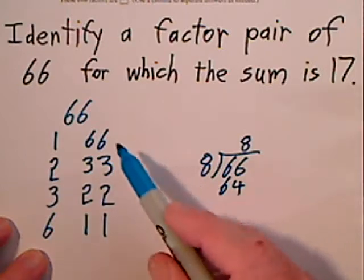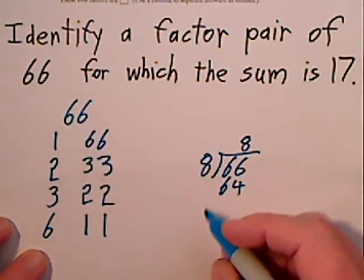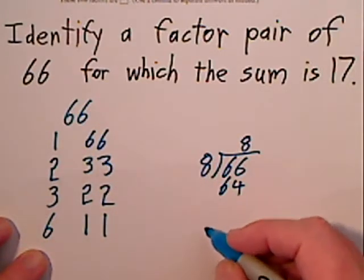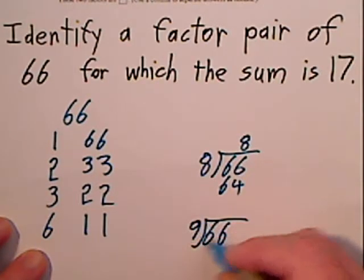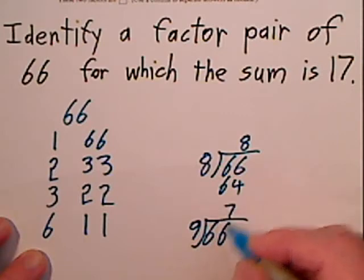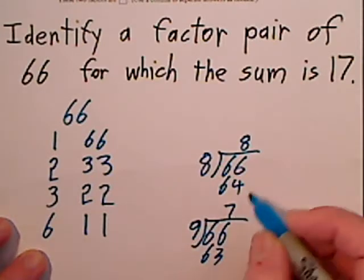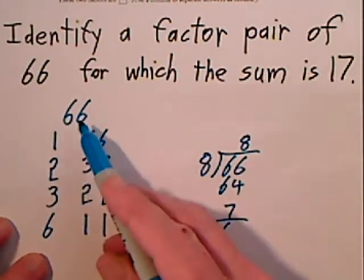9, and again you could just try it on your own. See if 9 will go in there. 9 times 7 is 63 so that's not going to work. 10 definitely won't go.